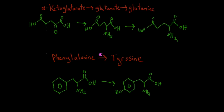I've drawn out the structures here — you don't have to memorize this, but it helps illustrate the concept. Here's alpha-ketoglutarate: it has a ketone group, and we simply substitute it for an amine group to get from alpha-ketoglutarate to glutamate. To get from glutamate to glutamine, we add on another nitrogen group and remove this alcohol — so we're just adding nitrogens over and over.